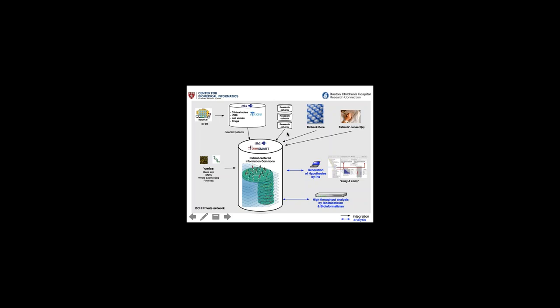The overall goal is to have the capability of integrating complex phenotypic longitudinal data, including time relations, with multiple research cohorts, biobank data, patient consent, and any kind of omics data — gene expression, SNP, whole-exome sequencing, whole-genome sequencing. There are two main use cases: generation of hypotheses by investigators using the user interface, and high-throughput analysis by connecting directly to the database. I'll show examples and published studies using both.